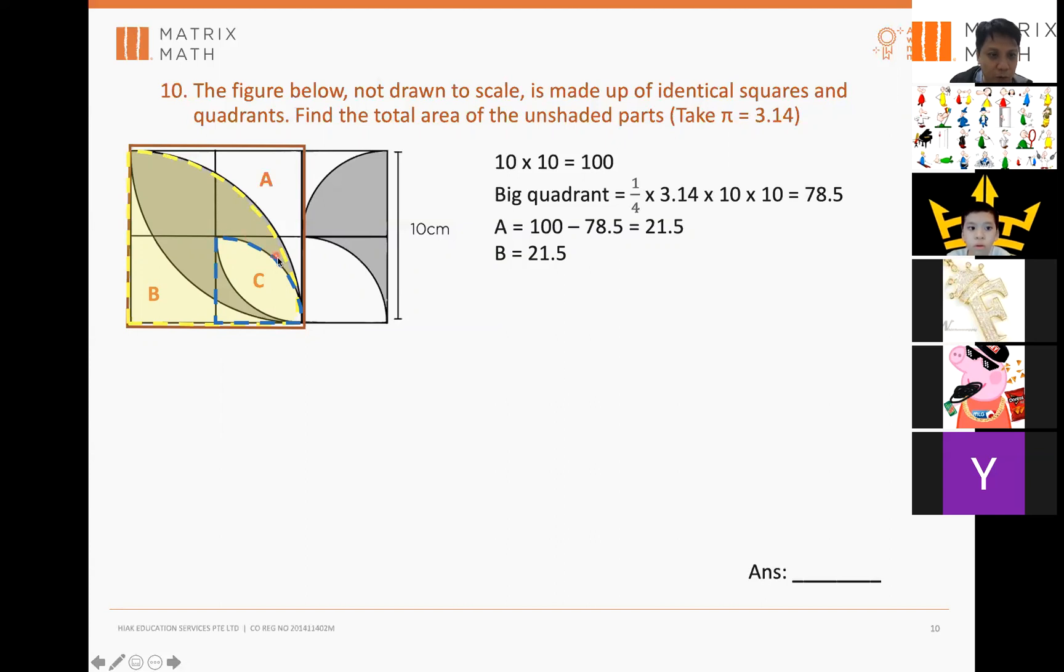So, what I do is I use the area of the quadrant. I subtract away the area of the triangle over here, this triangle. So, first I find the area of the quadrant first. 1 quarter times pi times 5 times 5. Again, you got to be very careful. What's the radius? The radius is 5.